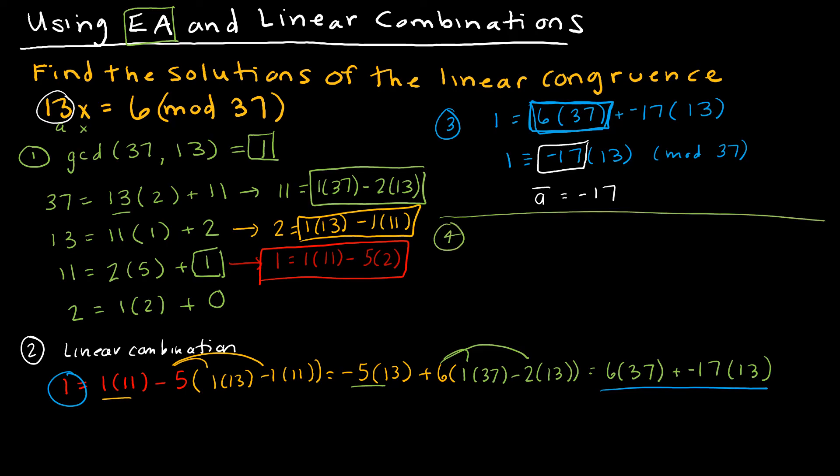So now what am I going to do with that? The most important step, and what we haven't done is to find the solutions, is I'm going to take -17 times 13x, and then I'm going to take -17 times 6 (mod 37). So what I know is that -17 times 13 is congruent to 1 mod 37. So I've already shown it here, so I'm not going to show it again. I'm just going to say this side is x. Now, the other side, if I take -17 times 6, I get -102 mod 37. So now, let's talk about the solutions.